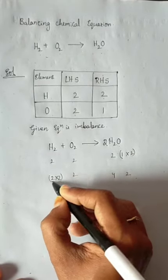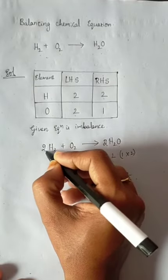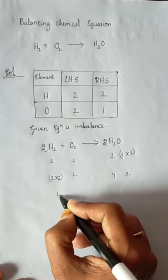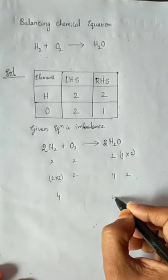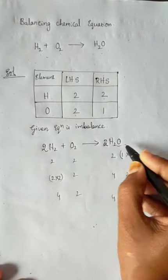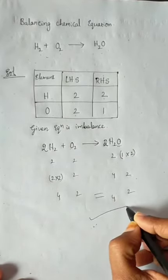So need to multiply here, nothing but 2. 2 twos are 4 hydrogens. Here 2 twos are 4 hydrogens. Oxygen 2, oxygens 2. So now the equation is balanced.